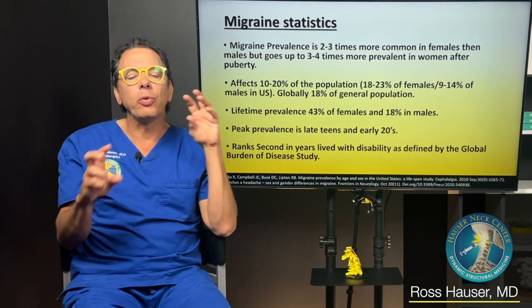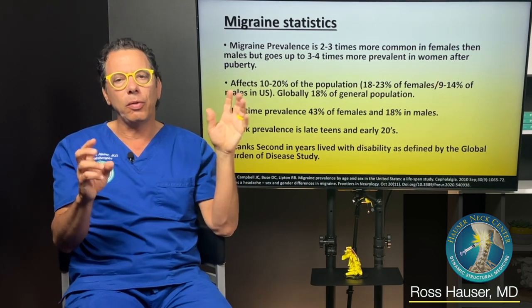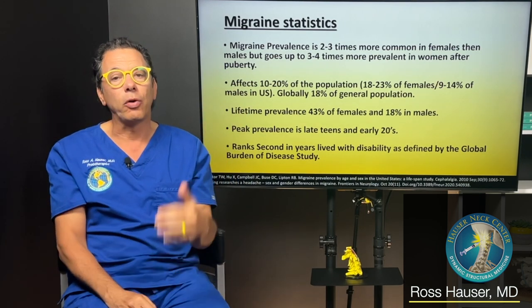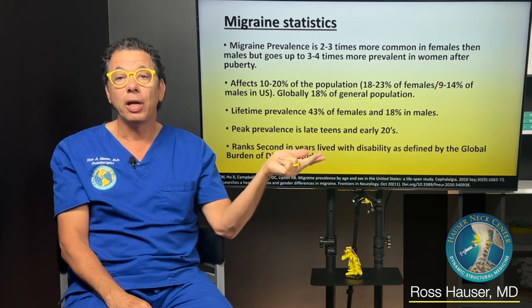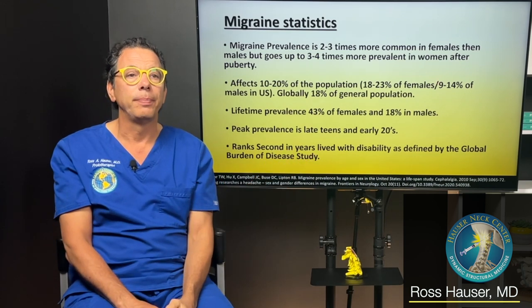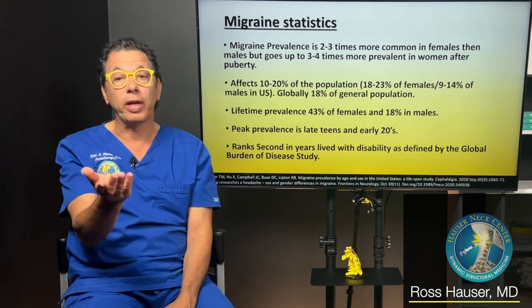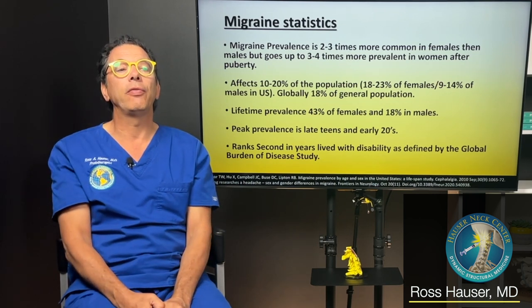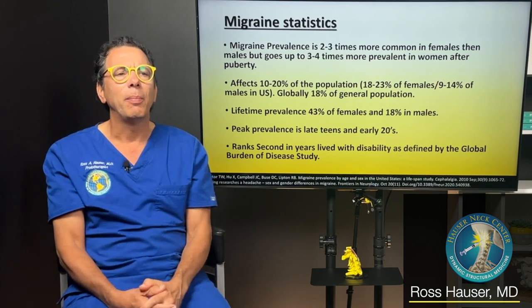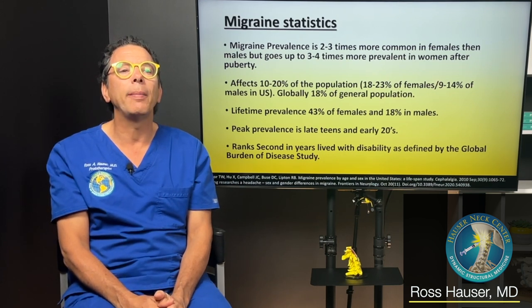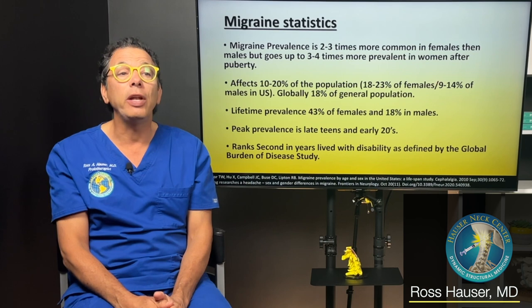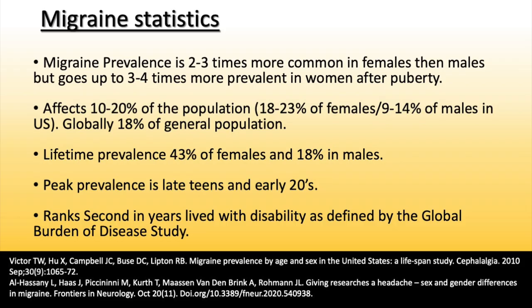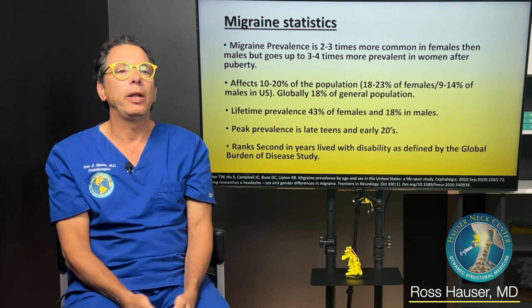Think about what's different between males and females — we know hormones differ. Any sort of medical condition like fibromyalgia, autoimmune diseases like lupus, or ACL injuries — those are way more common in females. Migraine prevalence is two to three times more common in females than males, going up to three to four times more prevalent after puberty. Men typically have more musculature, while women are just more loose-jointed. That loose-jointedness in the neck is what makes migraine headaches more prevalent in females.